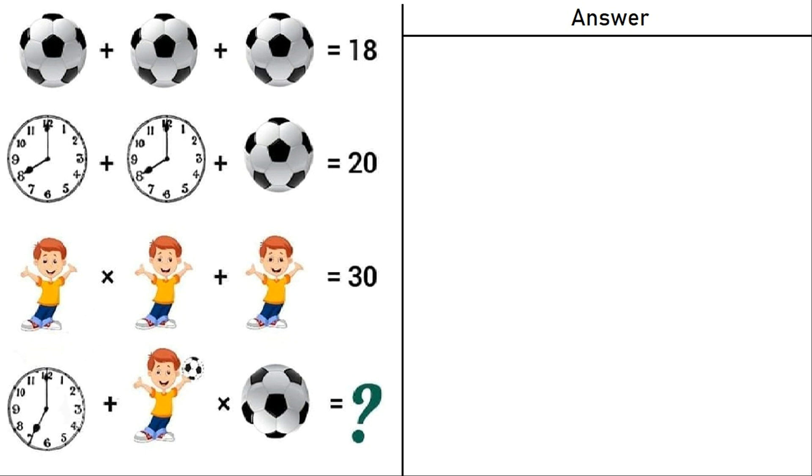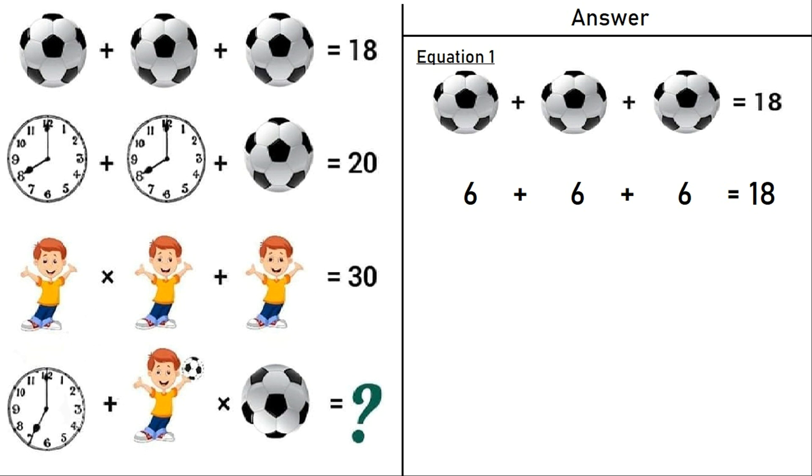Hope everyone has given their answer in the comment section. Now I will tell you the correct solution of this puzzle. Let's take equation number 1 which says football plus football plus football is equal to 18. 6 plus 6 plus 6 is equal to 18. A football is equal to 6.